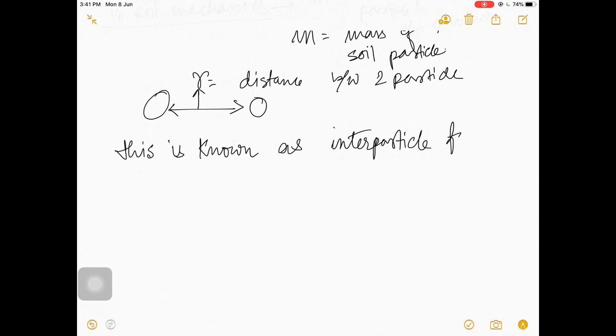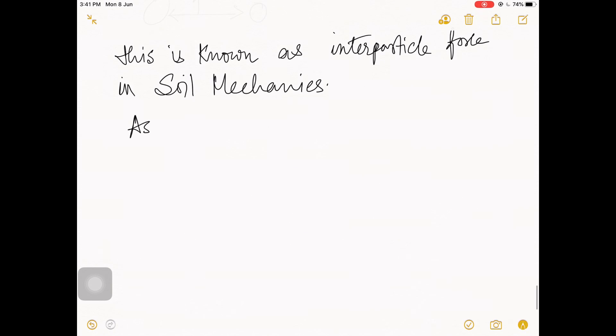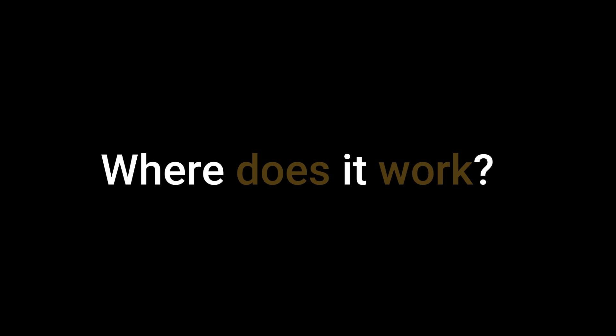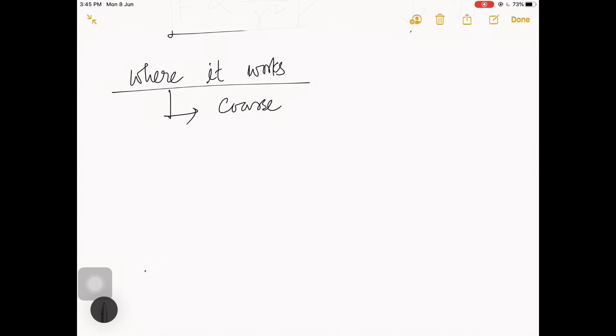If you observe carefully, gravitational force is proportional to the mass but inversely proportional to the distance between two masses. So just imagine: if the distance between two molecules gradually decreases, the value of force increases significantly.